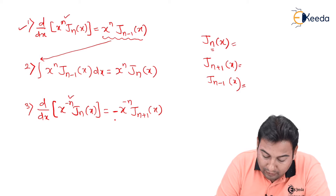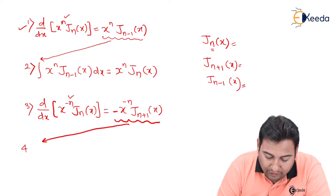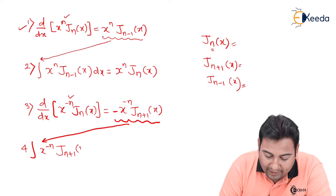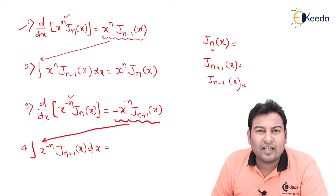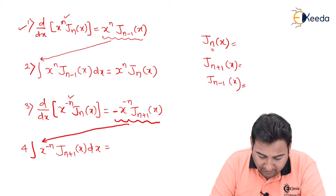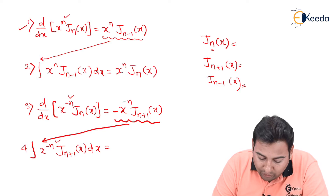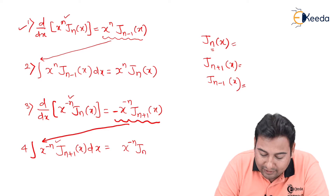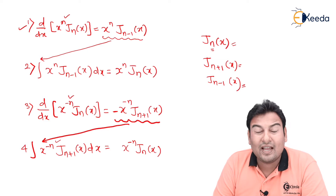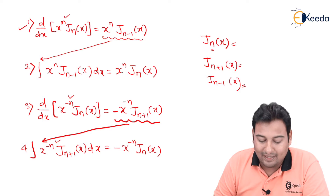The fourth formula is: ∫ x^{−n} · J_{n+1}(x) dx. Integration normally takes it to the future, but since we have x^{−n}, the effect is reversed and it takes it to the past. So the result is −x^{−n} · J_n(x).